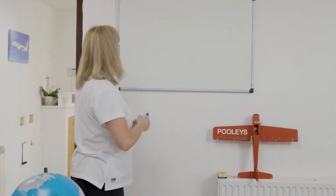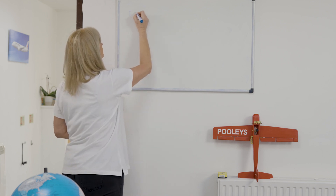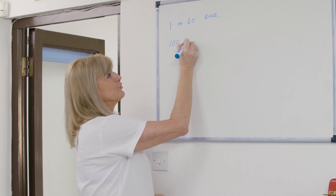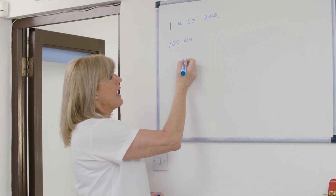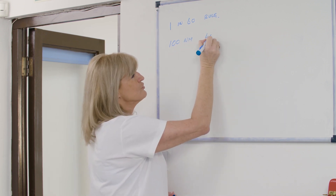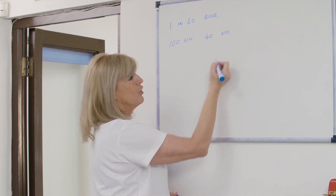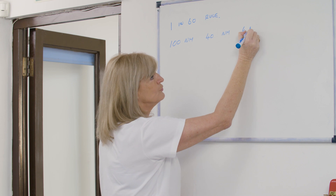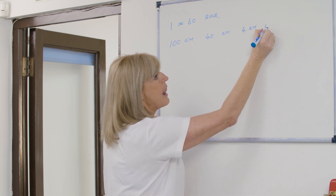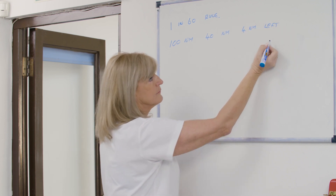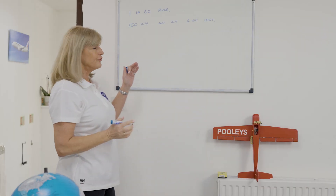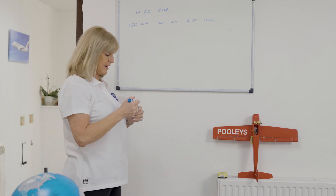We're now going to be looking at the 1 in 60 rule. If you are on a 100 nautical mile journey, and you realise 40 nautical miles along your track that you are 4 nautical miles left of track, what you would like to know is exactly what you have to turn to get back on track.